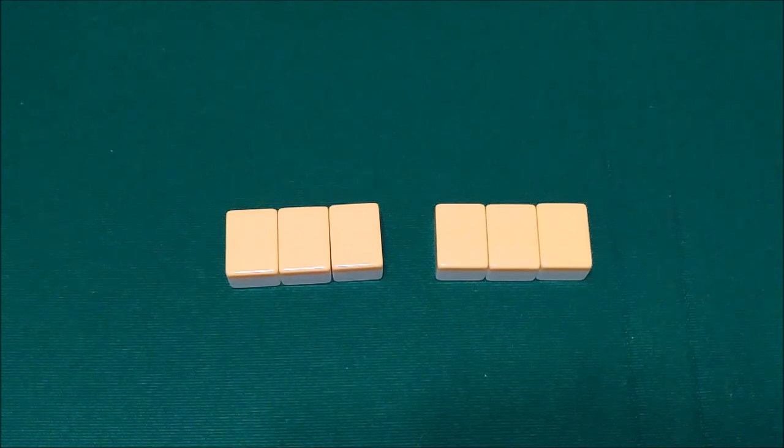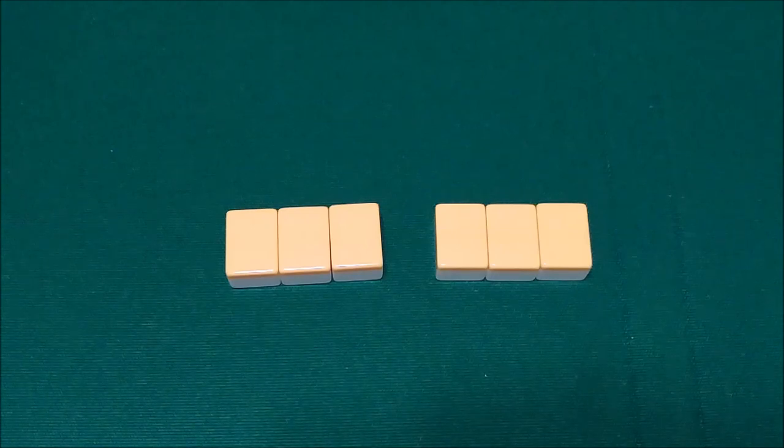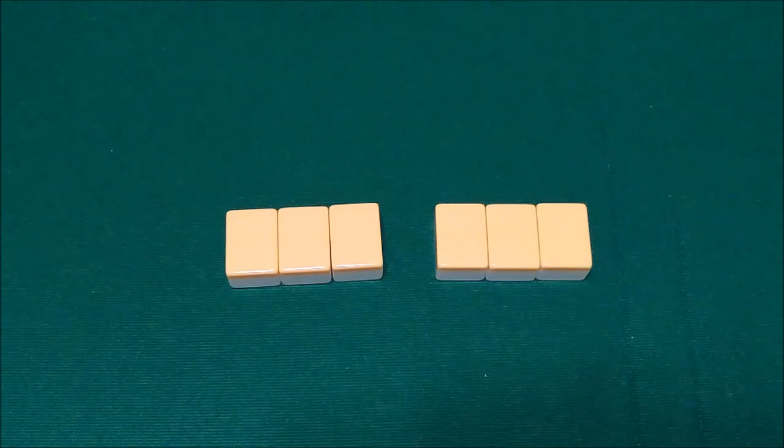For every hand, you start with a base of 20 Fu. 20 is the absolute lowest amount of Fu that you can have. In general, hands are worth 30 or more Fu. There are a couple exceptions, but we're going to talk about those when we get to those Yaku because there are specific Yaku where the hand is only worth a certain amount of Fu because of the Yaku.